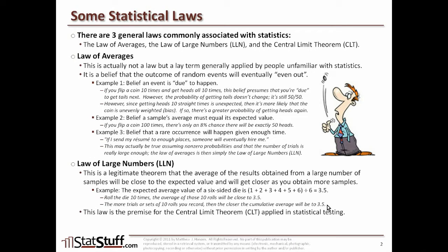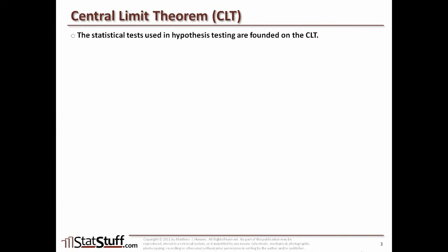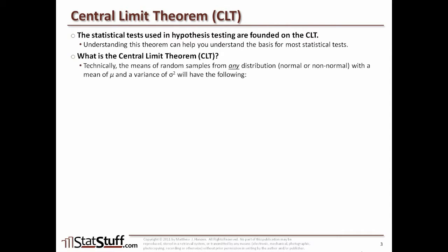This law is actually the premise for the central limit theorem that we apply to statistical testing. Many of the statistical tests used in hypothesis testing are founded on the central limit theorem. Technically, it states that the means of random samples from any distribution — whether normal or non-normal — given a certain mean and variance, will be approximately normally distributed, will have an overall mean equal to each of the separate means, and will have a variance equal to the variance divided by the number of samples.